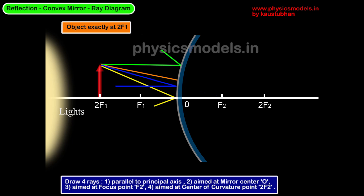Green parallel to the principal axis, orange aimed at 2F2, blue ray aimed at F2, and the yellow ray aimed at O. You can see the reflection pattern is very consistent, exactly as it was before.